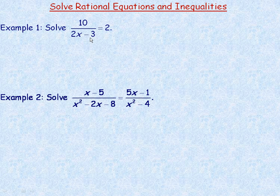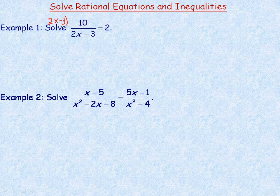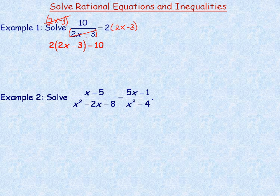We're going to rearrange this so that there's no longer a rational expression on either side. The only denominator here besides the 1 underneath the 2 is 2x minus 3. So one thing we could do is multiply both sides by 2x minus 3, so that this 2x minus 3 divides out, and we'll be left with 10 equals 2 times 2x minus 3.